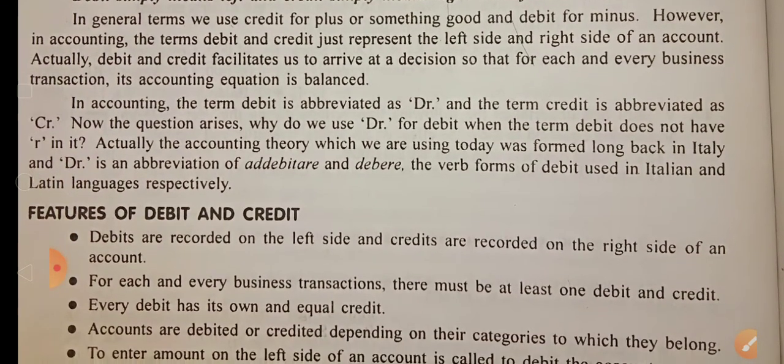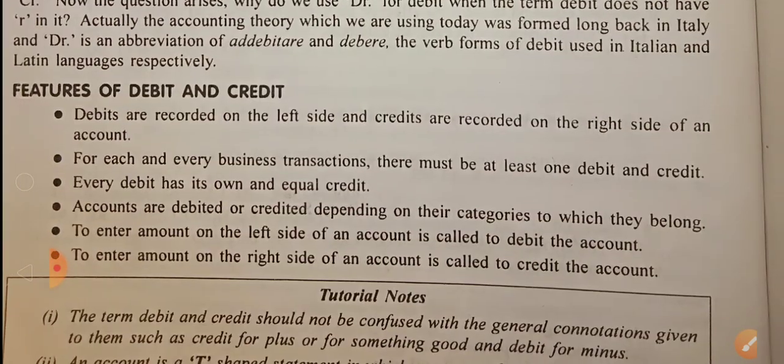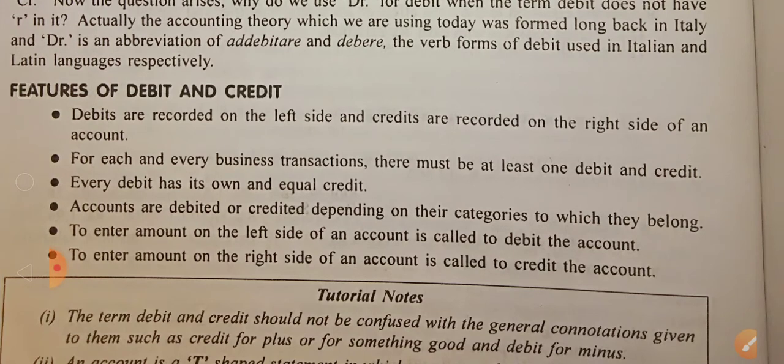The features of debit and credit: debits are recorded on the left side and credits are recorded on the right side of an account. For each and every business transaction, there must be at least one debit and one credit. Every debit has its own and equal credit.